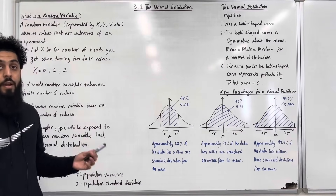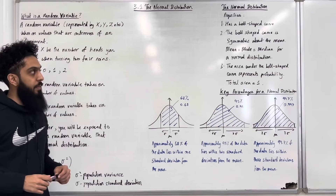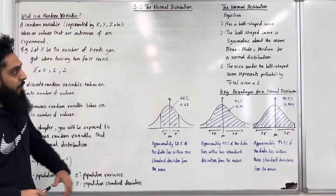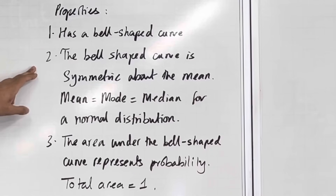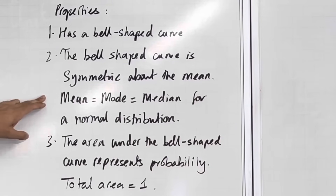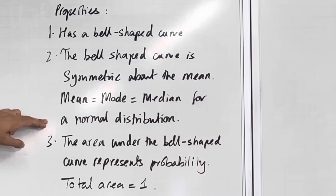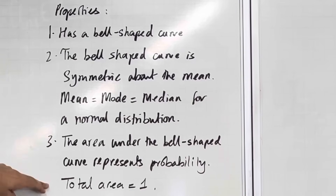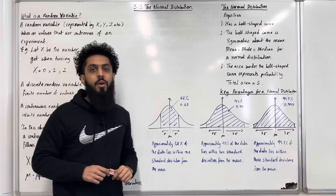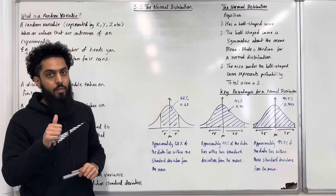Let's look at the properties of the normal distribution. Number 1: it has a bell shaped curve. Number 2: the bell shaped curve is symmetric about the mean. The mean is equal to the mode which is equal to the median, due to its symmetry. Number 3: the area under the bell shaped curve represents probability, and the total area is equal to 1, because probabilities add up to 1.